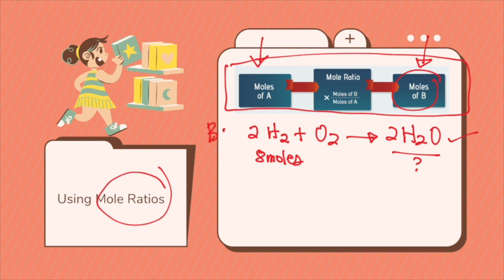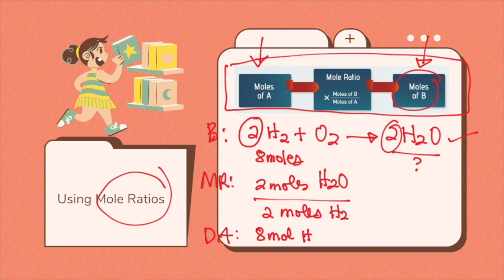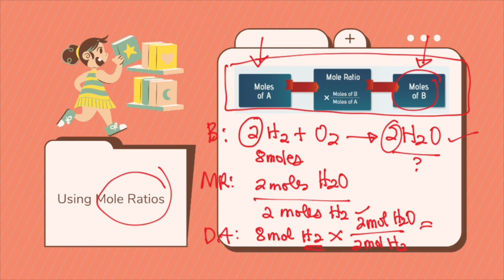After balancing the equation, we use our mole ratio. There are two moles of H₂O, so the mole ratio is 2 moles of H₂O over 2 moles of H₂. In dimensional analysis, we take the 8 moles of H₂ given and multiply it by the mole ratio. Remember, the same substance must be in the opposite position so you can cancel it out — 2 moles of H₂ in the denominator and 2 moles of H₂O on top — allowing you to cancel H₂.